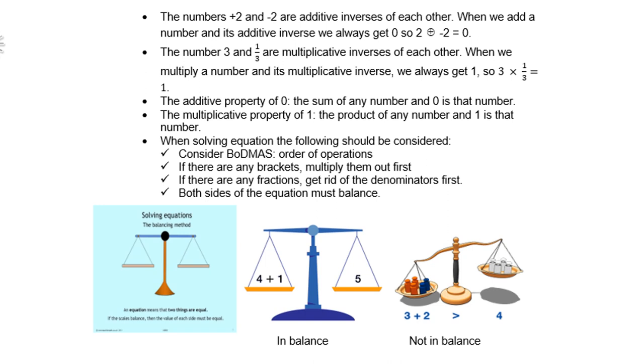If there are any brackets, multiply them out first. If there are any fractions, get rid of the denominators first. Both sides of the equation must balance. If you look at those three diagrams there, it shows you that an equation works like a scale. It must always be in balance, like 4 plus 1 must balance with 5. But if the scale leans to the left, like 3 plus 2 which is 5, it is greater than 4.